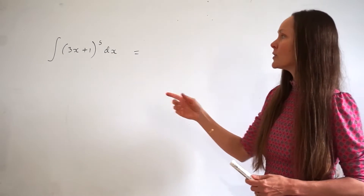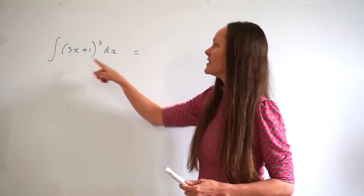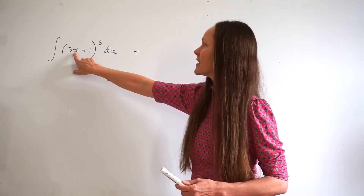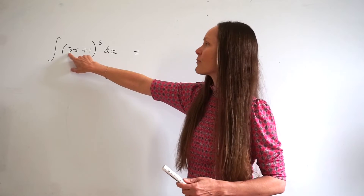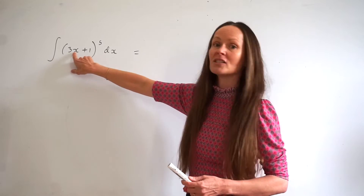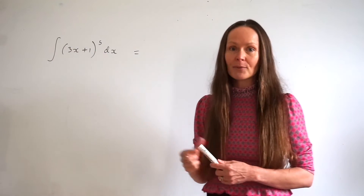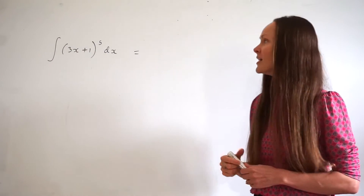When I say the coefficient of x, I mean inside the brackets. In this case, the coefficient of x is 3 — the number that's being multiplied with x.